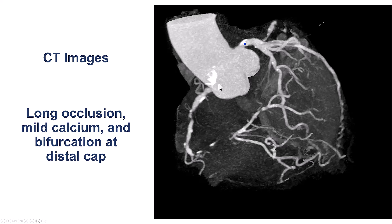We did obtain the coronary CT angiogram, which was very useful. It did show that it was indeed a long occlusion with some calcification, which wasn't very severe. There was a bifurcation of the distal cap with some entry point into the distal right coronary artery.